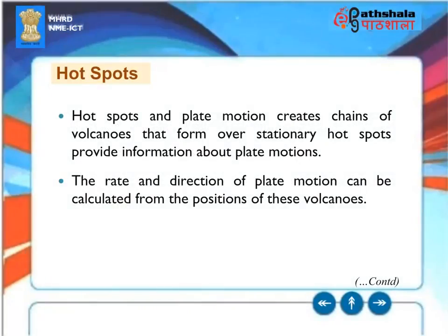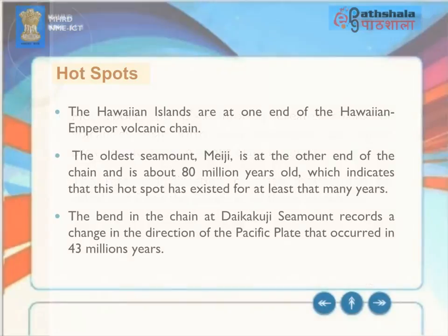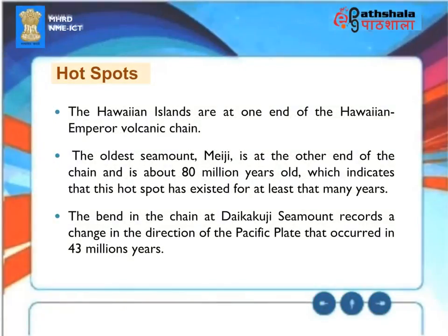Chains of volcanoes that form over stationary hotspots provide information about plate motions — the rate and direction of plate motion can be calculated from the positions of these volcanoes. The Hawaiian Islands are at one end of the Hawaiian-Emperor volcanic chain. The oldest seamount, Meiji, is at the other end of the chain and is about 80 million years old, indicating that this hotspot has existed for at least that long. The bend in the chain at Daikakuji seamount records a change in the direction of the Pacific plate that occurred 43 million years ago.